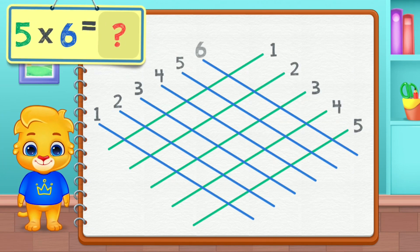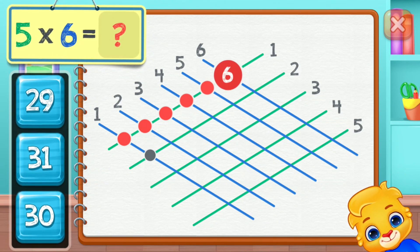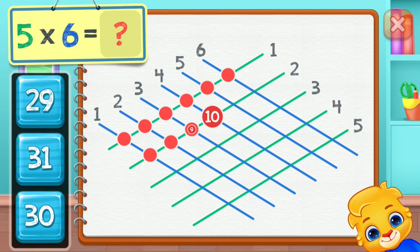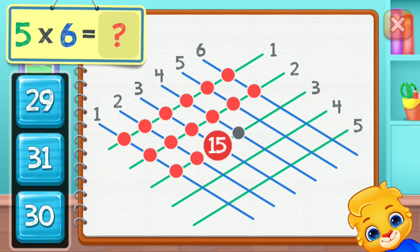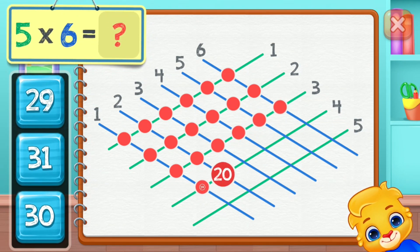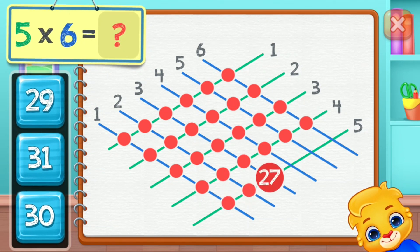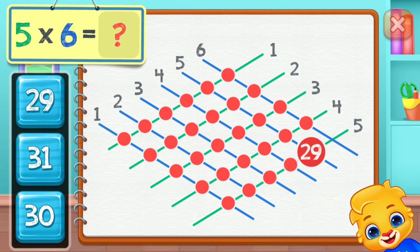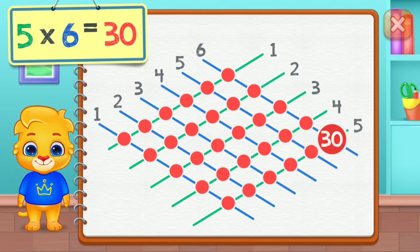5 times 6 equals — 1, 2, 3, 4, 5, 6, 7, 8, 9, 10, 11, 12, 13, 14, 15, 16, 17, 18, 19, 20, 21, 22, 23, 24, 25, 26, 27, 28, 29, 30! 5 times 6 equals 30!